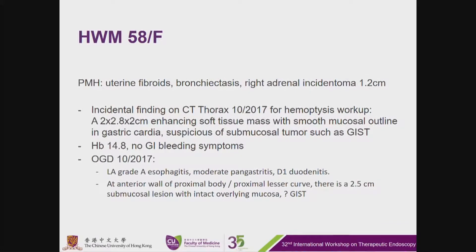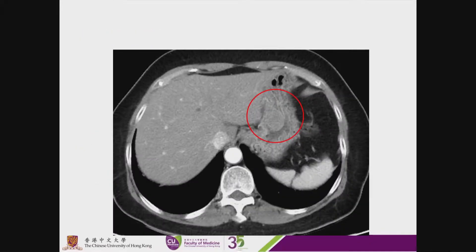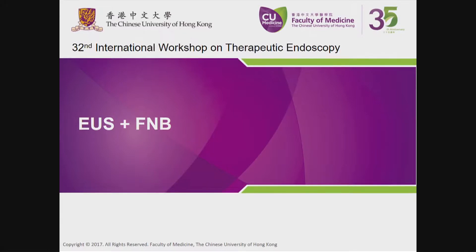OGD was done last month. It found at the anterior wall of the proximal lesser curve a 2.5 cm submucosal lesion with intact overlying mucosa, also suspicious of a GIST. This is the CT scan of this patient showing the lesion. The plan today is for EUS and fine needle biopsy.